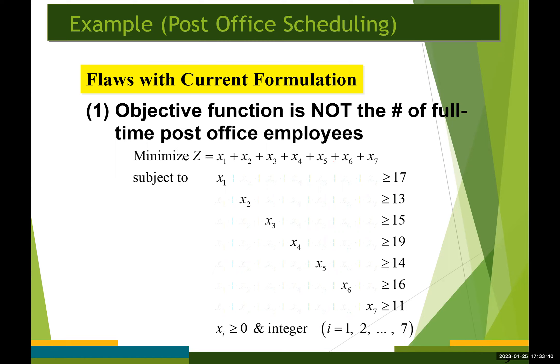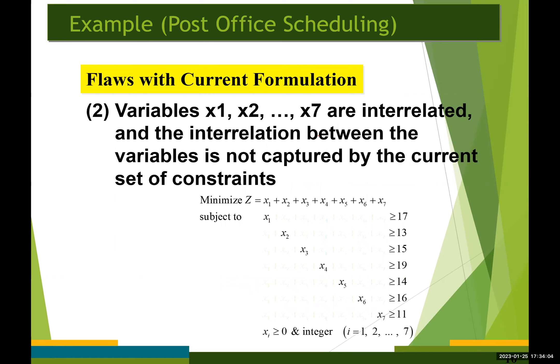For example, each employee who starts work on Monday works Monday through Friday. That employee is included in x1, x2, x3, x4, and x5 with the current decision variable definition. So in the current formulation, the variables x1 through x7 are interrelated with each other, and this interrelation between the variables is not captured by the current set of constraints.